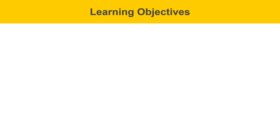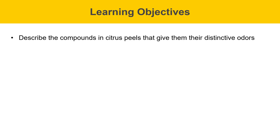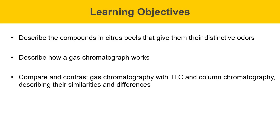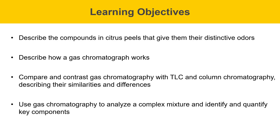Some learning objectives are described on this slide. At the end of this experiment, you'll be able to describe the compounds in citrus peels that give them their distinctive odors. You'll be able to describe how a gas chromatograph works. You'll be able to compare and contrast gas chromatography with TLC and column chromatography, and describe their similarities and differences. And you'll be able to use gas chromatography to analyze a complicated mixture and identify and quantify key components.